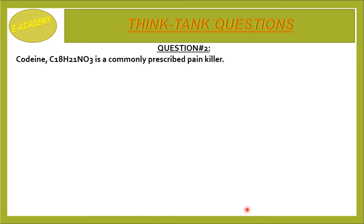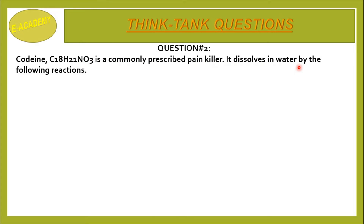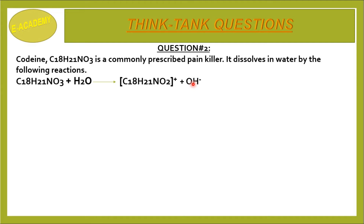Question number 2. Codeine C18H21NO3 is a commonly prescribed painkiller. It dissolves in water by the following reaction: C18H21NO3 + H2O converts to C18H21NO3+ plus OH-.